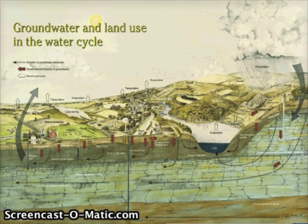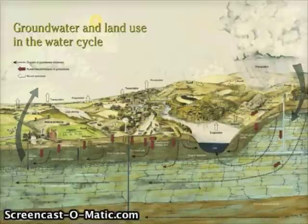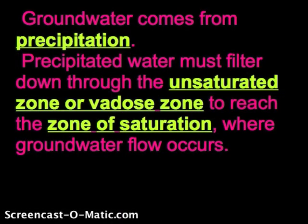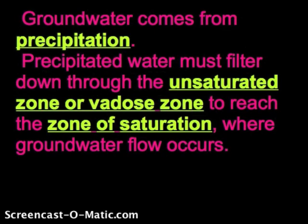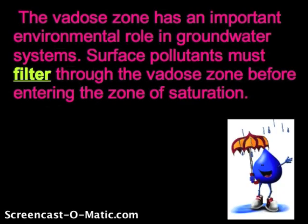Groundwater comes from precipitation. Precipitated water must filter down through the unsaturated zone — sometimes called the vadose zone — to reach the zone of saturation. The zone of saturation is completely filled with water, and this is where groundwater flow actually occurs. The vadose zone has an important environmental role: surface pollutants must filter through the vadose zone before entering the zone of saturation. This zone filters out a lot of things, though it doesn't always filter out man-made pollutants like oil.